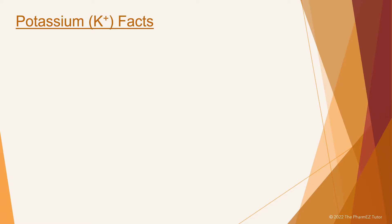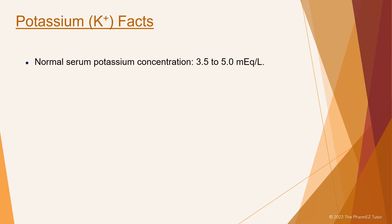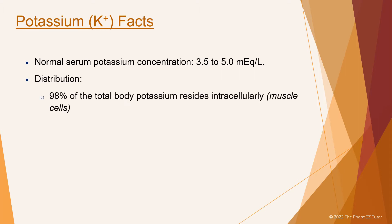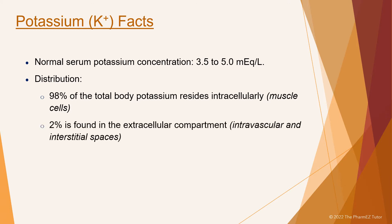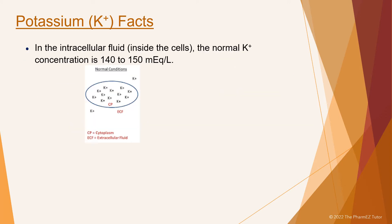Here are some facts about potassium. The normal potassium concentration in the serum is maintained within a narrow range of 3.5 to 5 MEQs per liter. 98% of the total body potassium resides intracellularly, predominantly in the muscle, and only 2% is found in the extracellular compartment, intravascular and interstitial spaces. In the intracellular fluid, inside the cells, the normal potassium concentration is 140 to 150 MEQs per liter.